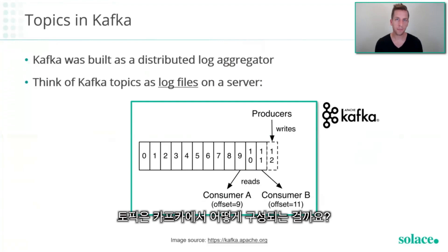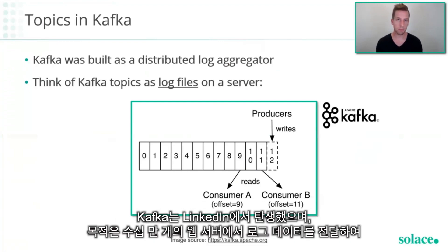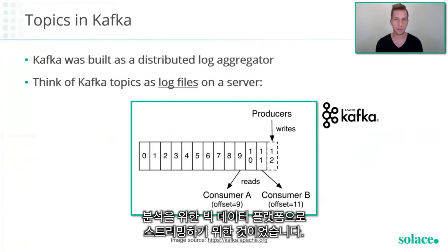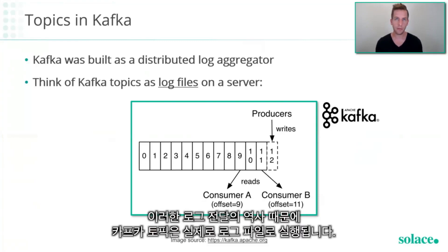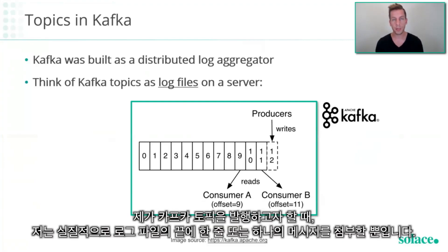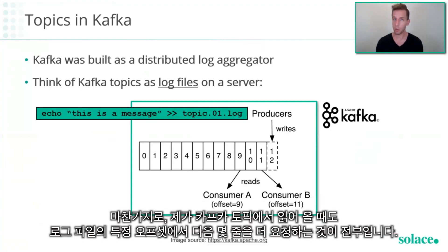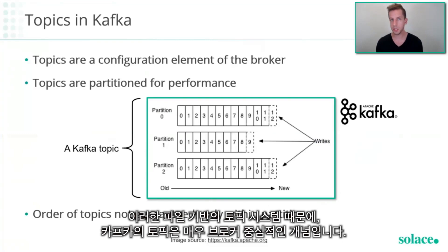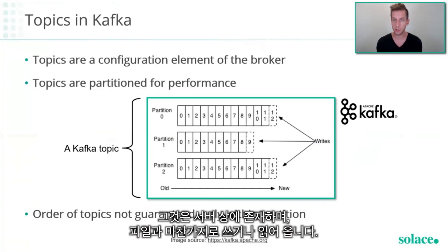So how are topics configured in Kafka? Kafka was born at LinkedIn and it was built to ship log data from hundreds or thousands of web servers and stream it into their big data platform for doing analytics. Because of this log shipping heritage, Kafka topics are actually implemented as log files — you can literally think about them as log files on a server. When I publish to a Kafka topic, I'm essentially appending a message to the end of a log file. Similarly, when I read from a Kafka topic, I'm asking for the next number of lines from a particular offset in a log file. Topics in Kafka are a very broker-centric concept — they exist on a server, you write to them and read from them like you would a file.